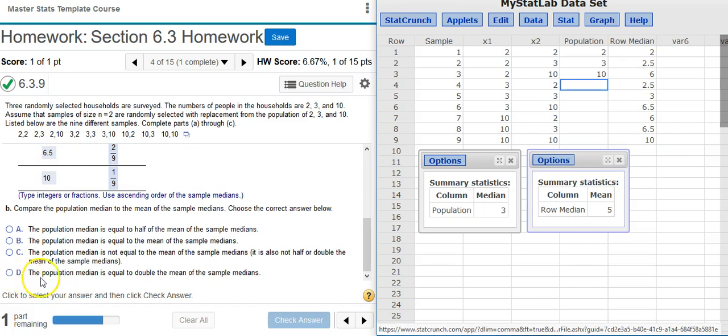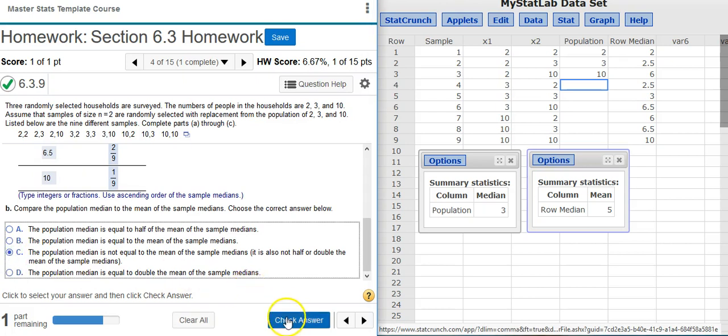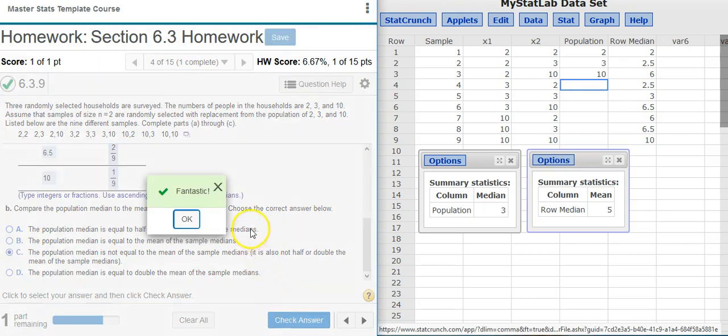Answer option D says the population median is equal to double the mean of the sample medians. 3 is not twice 5, so answer option C is the correct answer. Fantastic!